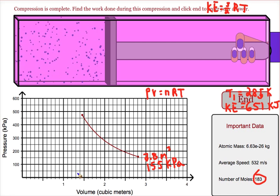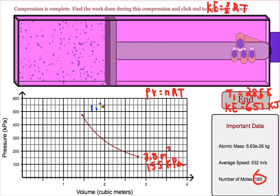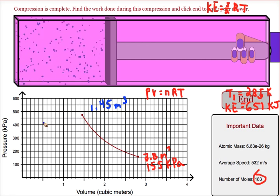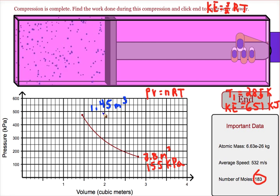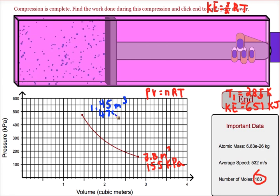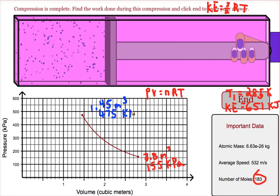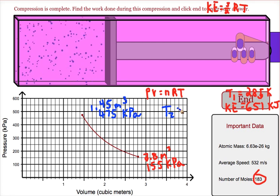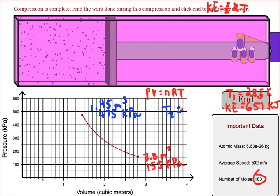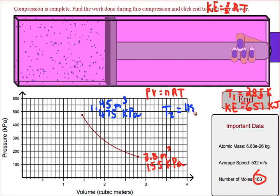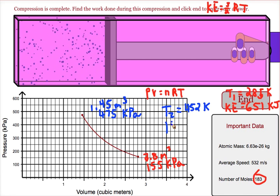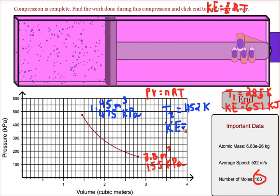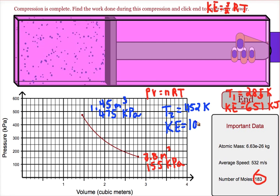We estimate that the new volume is about 1.45 meters cubed. The new pressure looks like we're about 475 kilopascals. With that, we can find our new temperature and our new kinetic energy. The new temperature is about 452 Kelvin, and our new kinetic energy is about 1,033 kilojoules.